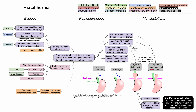The paraesophageal hiatal hernia will have slightly different symptoms. Because the fundus of the stomach is above the diaphragm and kind of pinched, that can cause epigastric or substernal pain. You can also have early satiety since your stomach is effectively smaller than before, so you become full faster. And because your stomach is smaller, you can have retching and vomiting as well. It's also possible for type 2 hiatal hernia to cause GERD symptoms, though it is less common than in type 1.